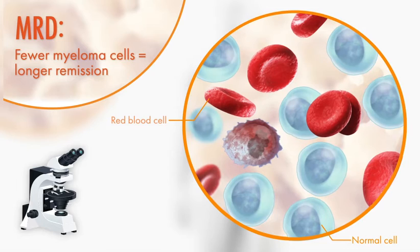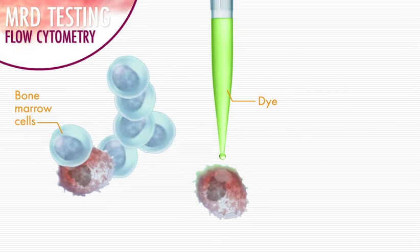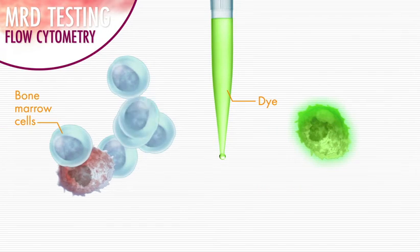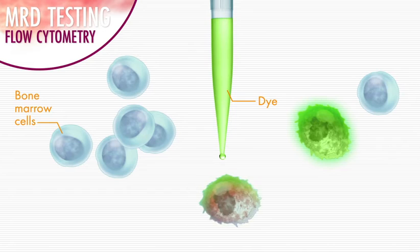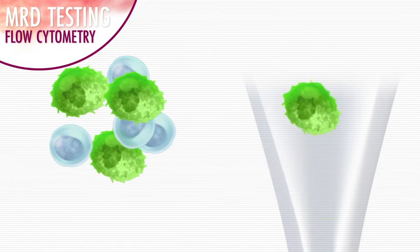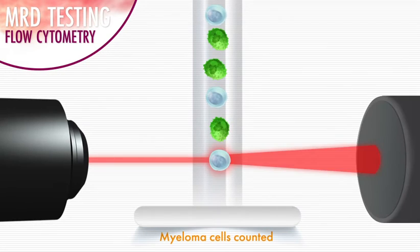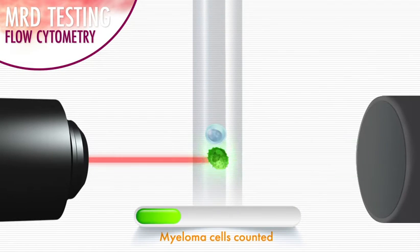There are two main tests used to measure MRD. One test is flow cytometry. In flow cytometry, cells from a sample taken from your bone marrow are mixed with a dye that stains myeloma cells but leaves healthy cells unmarked. After getting mixed with the dye, the cells are run through a machine called a flow cytometer, which uses a laser to count the dyed myeloma cells.